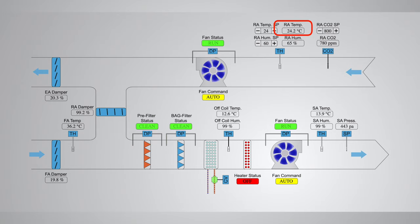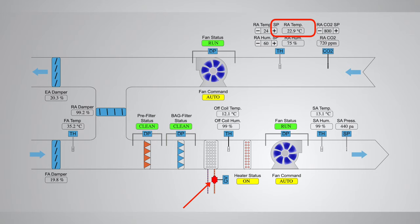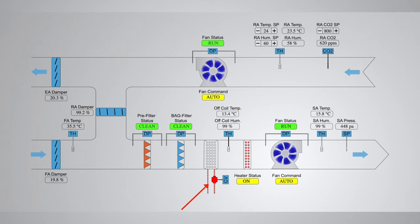This results in cooling the space more, bringing the return air temperature down. The cooling coil will be modulated until the return air temperature matches the set point. Once the set point is achieved, or the return air temperature is nearing the set point, the control valve will start to close until the return air temperature is within the design set point. If the return air temperature falls below the set point, the chilled water control valve will be fully closed. If the return air temperature remains less than the set point even after the control valve is fully closed, then the electric heater will be switched on to maintain the space temperature until the return air temperature and set point match.